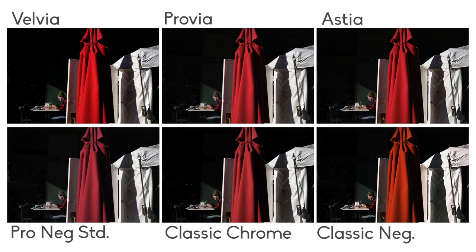Velvia might actually look the best of these. Provia looks fine — right down the middle. Astia is my second favorite, or maybe my actual favorite, as a basic film simulation. No — I think I'm sticking with Velvia for this one. The Pro Neg Standard is just a bit too flat; the reds look a little muted. Just next to the Astia one, I think I like Astia better. Classic Chrome looks okay, a little desaturated again, but changes a lot when you change some of the settings.